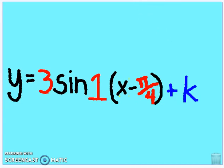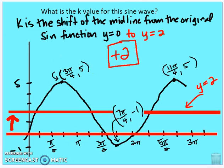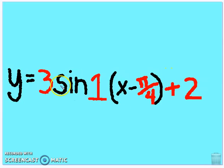The last parameter is the vertical shift, which is just the shift of the median from the original sine function — and we've already found this. The median is at y equals 2, while the parent sine function has its median at y equals 0. So the midline shifted up two units, meaning k equals 2. The complete sine equation is y equals 3 times sine of (x minus pi over 4) plus 2.